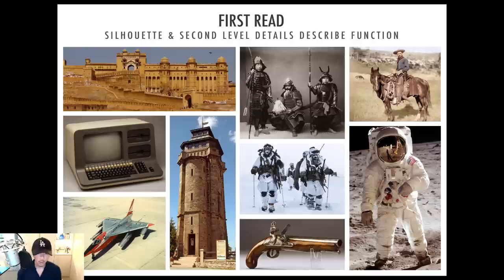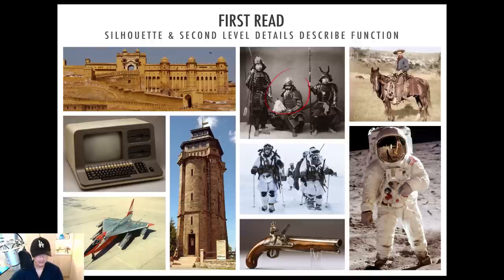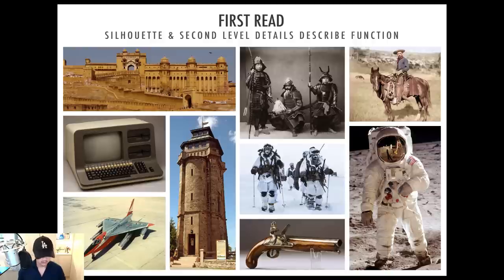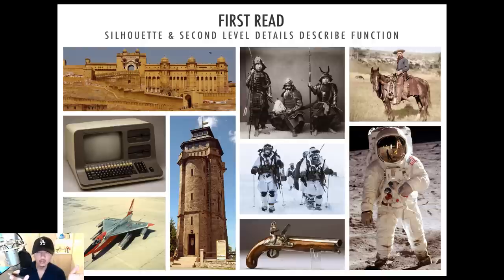When you're doing concept art, those are the first things to spend time on — what are my secondary details, are they breaking the form so I can identify the design within fractions of a second? There's no guessing: that's a samurai, that's a cowboy. All that knowledge comes from culture. But what happens when you're introducing a new design, something never seen before? If you make everything detail-oriented but your secondary details don't tell you what the design is, all you're doing is confusing the viewer.